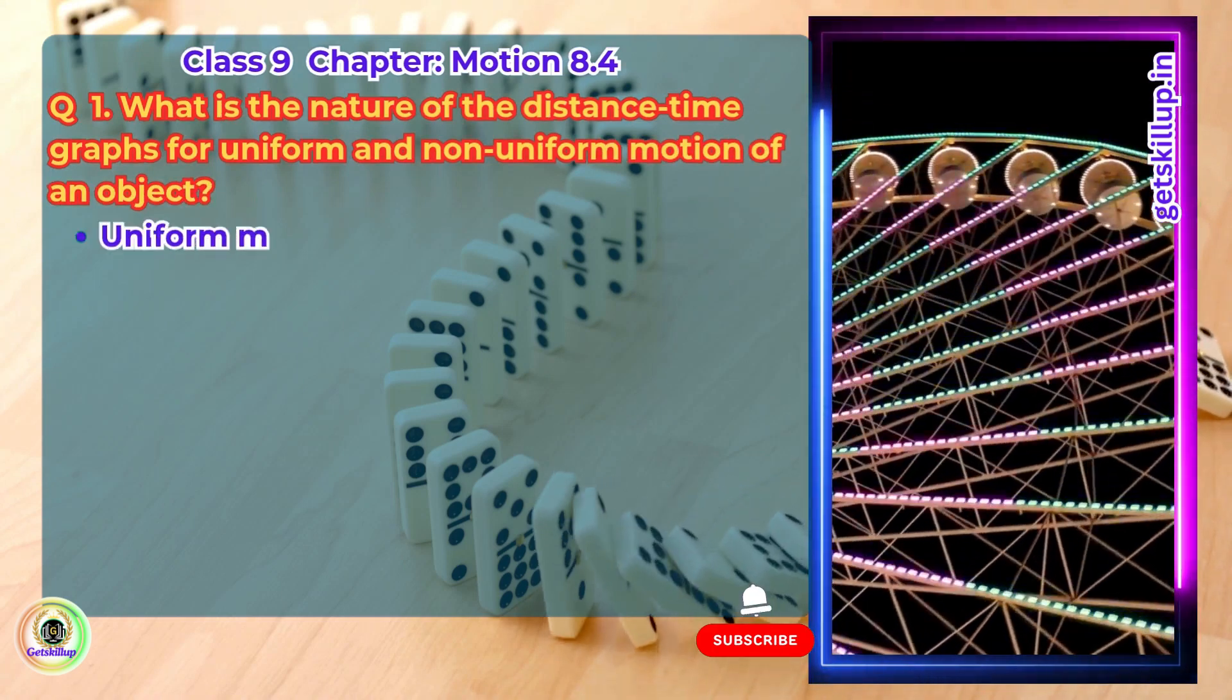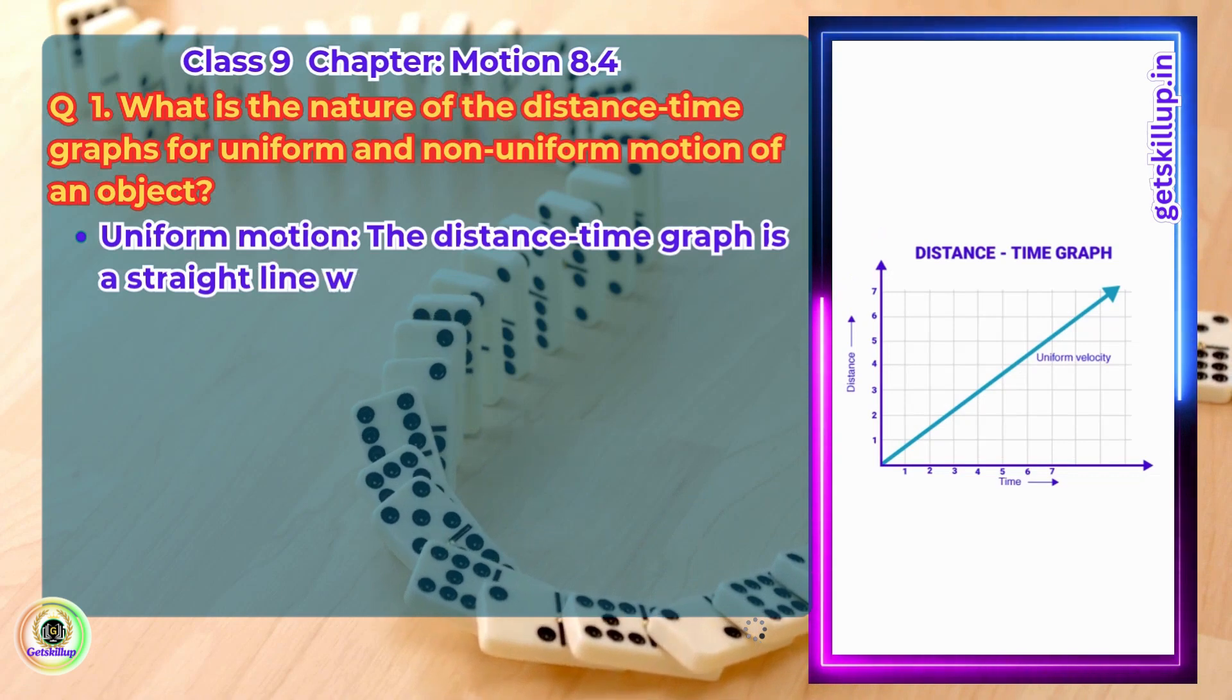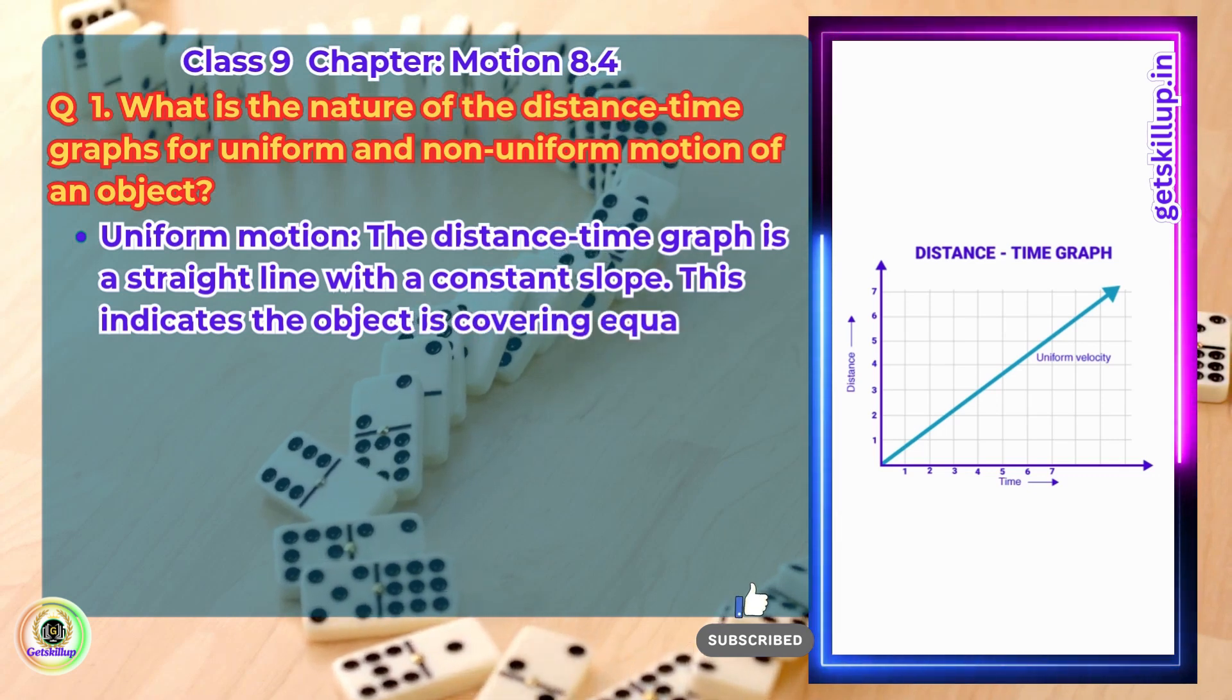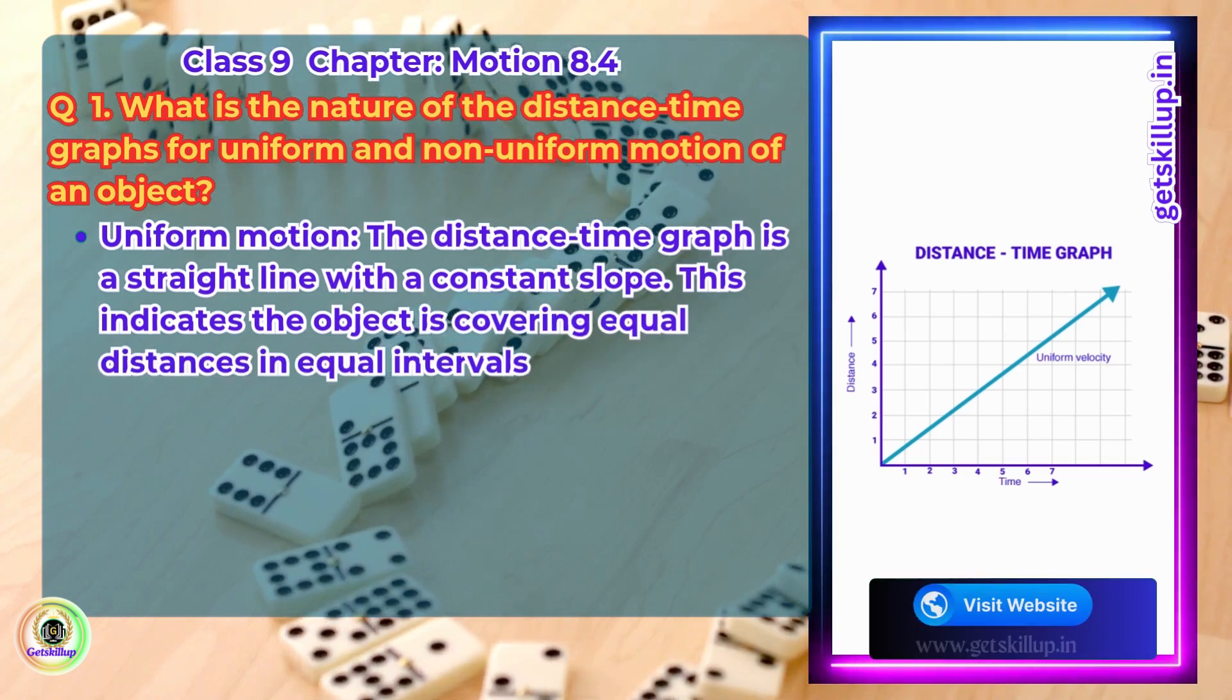Answer: Uniform motion. The distance-time graph is a straight line with a constant slope. This indicates the object is covering equal distances in equal intervals of time.